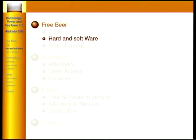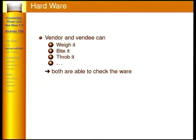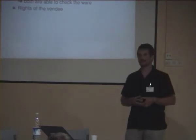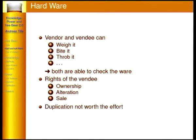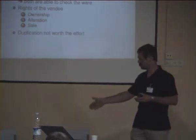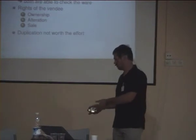I want to explain the difference between hardware and software, because sometimes there is misunderstanding. If a vendor buys a piece of hardware, they can weigh it, bite on it, drop it — they can evaluate what they are buying. The vendor has ownership rights: they own the chair they just bought, they can alter it, move it, and even sell it. And duplication of the chair is not really worth the effort, since manufacturing is better left to experts.